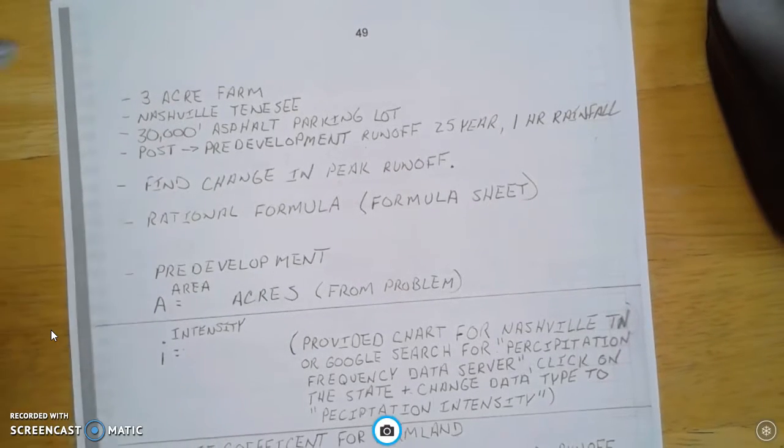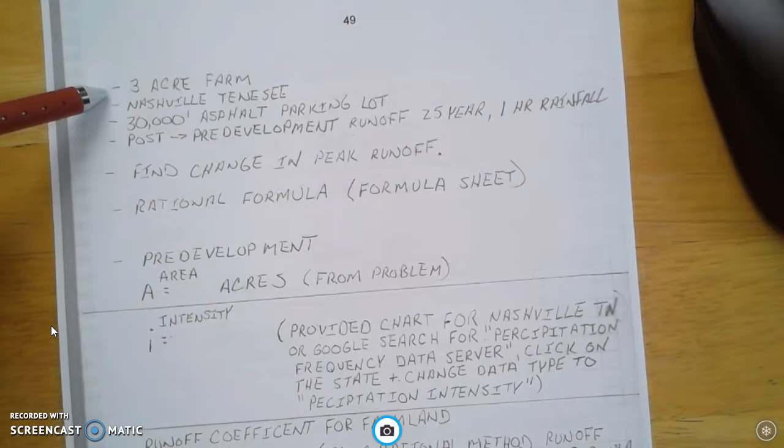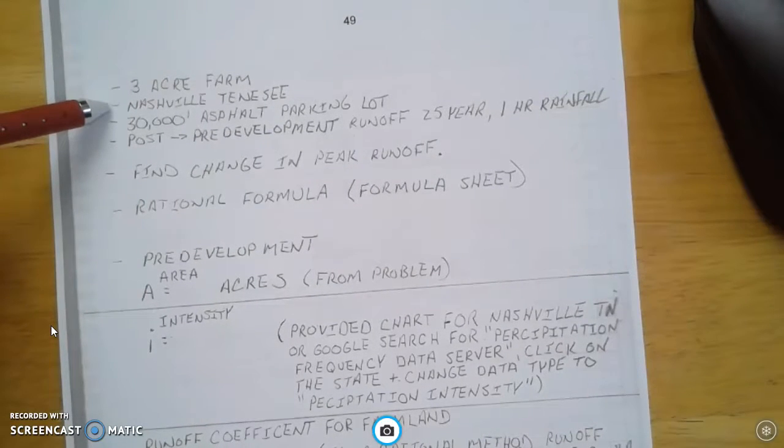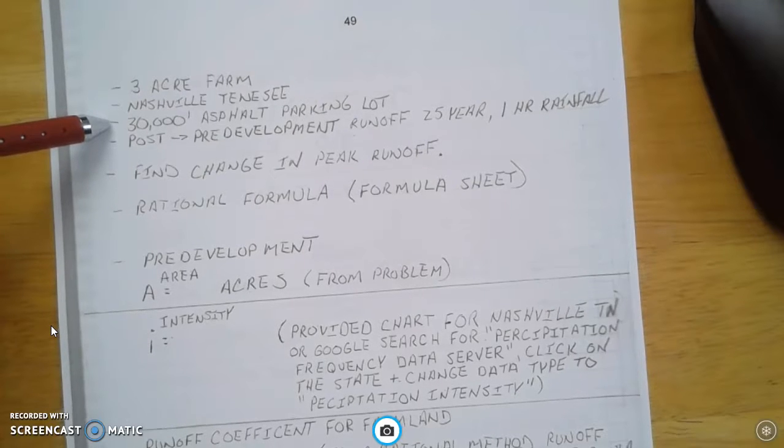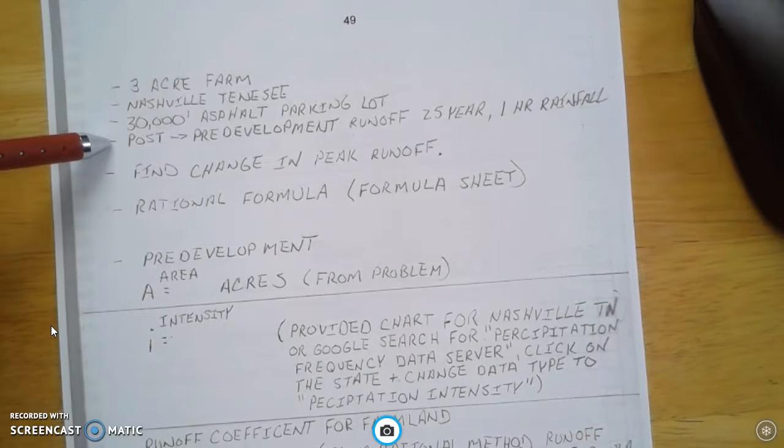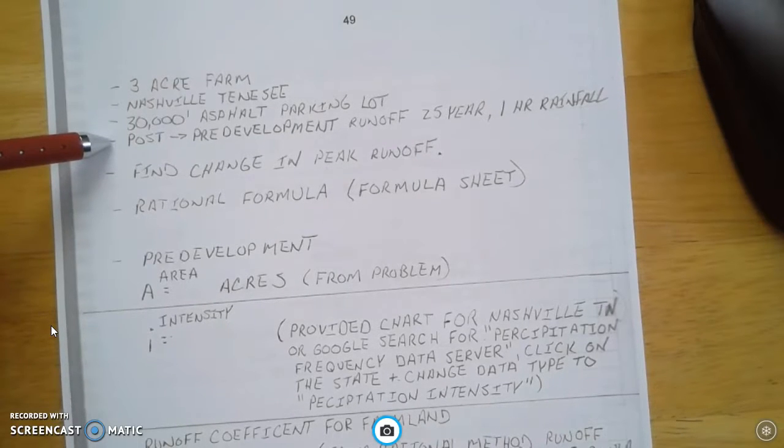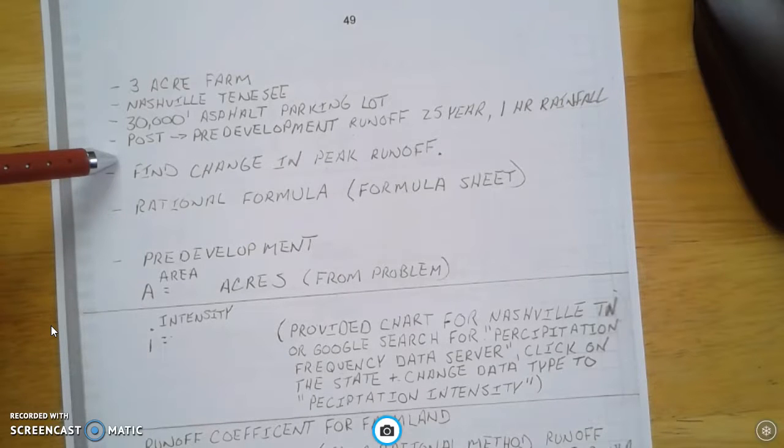And you're going to see on here I have a three-acre farm. It's in Nashville, Tennessee, which is important to know, and we have 30,000 square feet parking lot. The post-development has to be the same as the pre-development runoff for a 25-year, one-hour rainfall storm. So we're going to find the change in peak runoff.